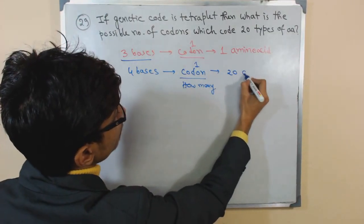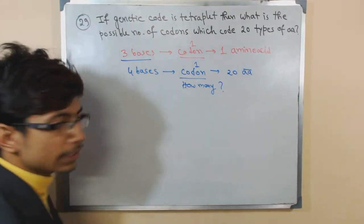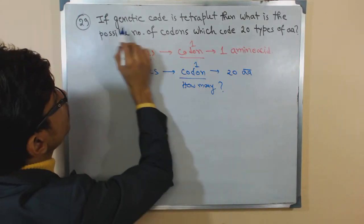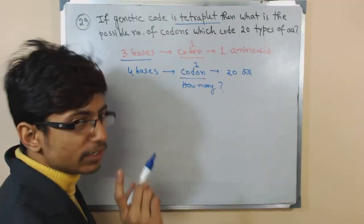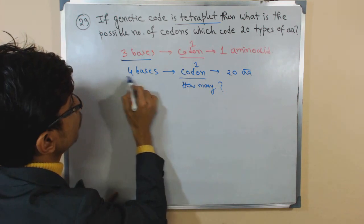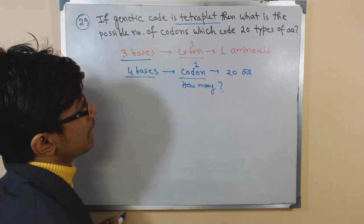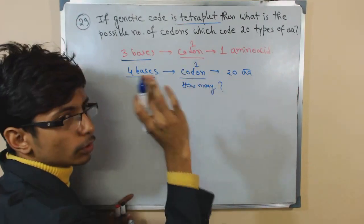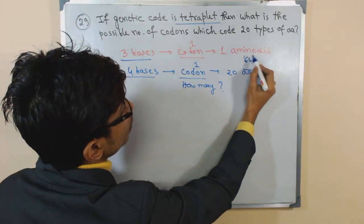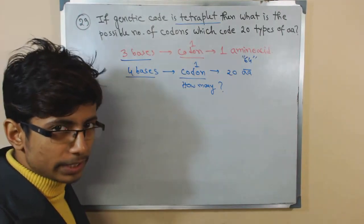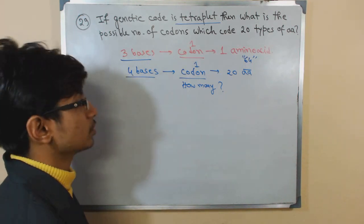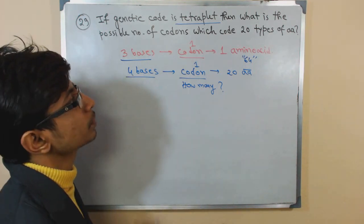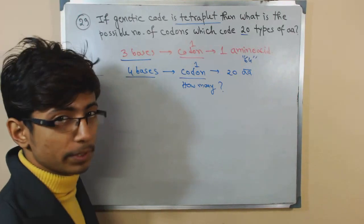That is the question, because if the genetic code is a tetraplate—tetra means four—so four bases will be there. Because we know for coding 20 amino acids, we require 64 codons generally. So how many codons will be there to code for 20 types of amino acids?